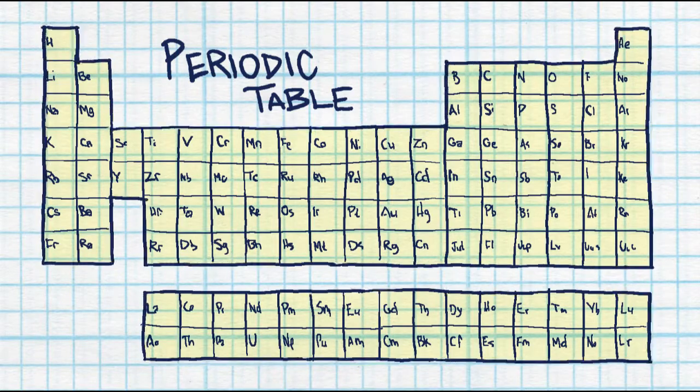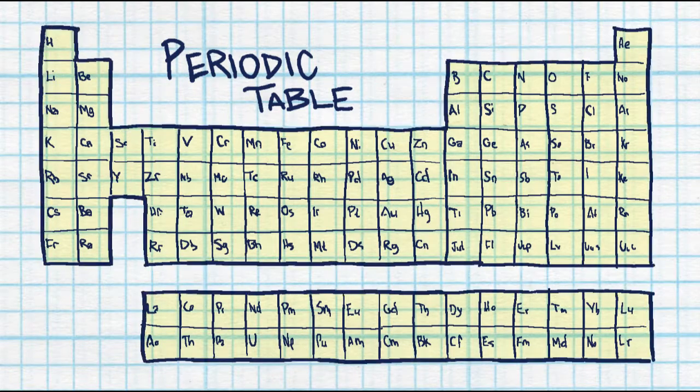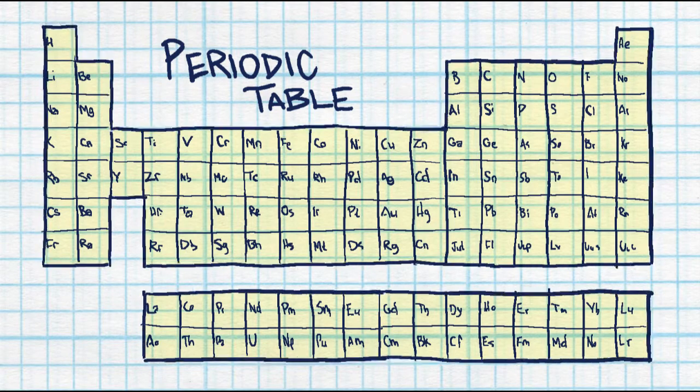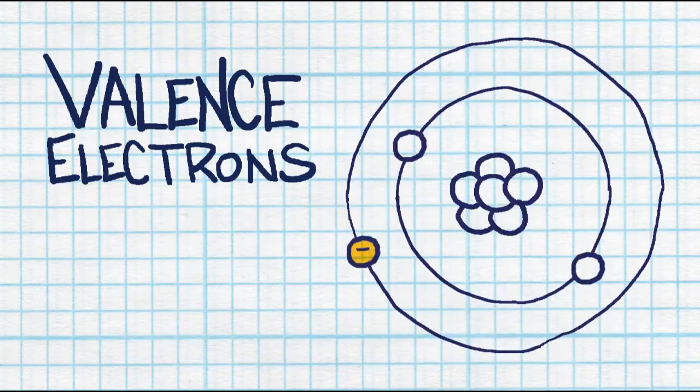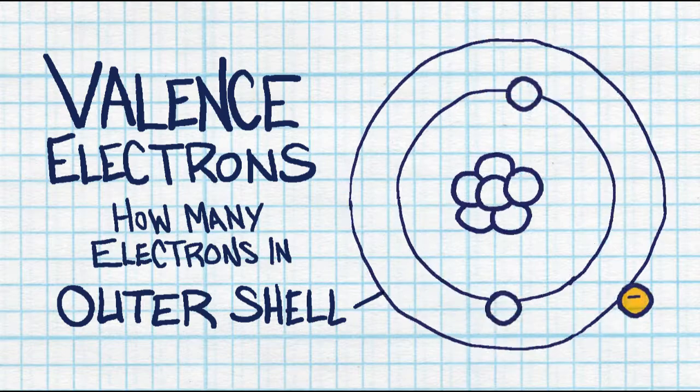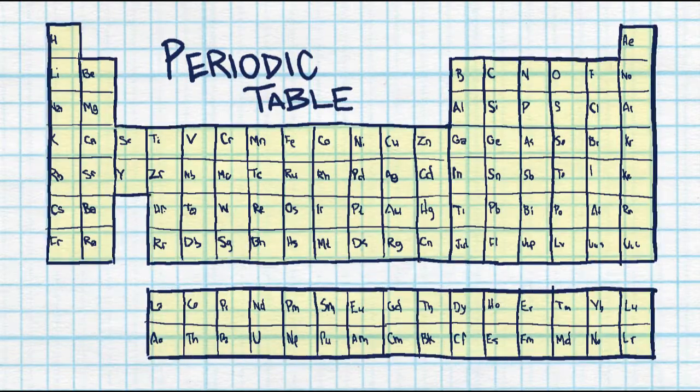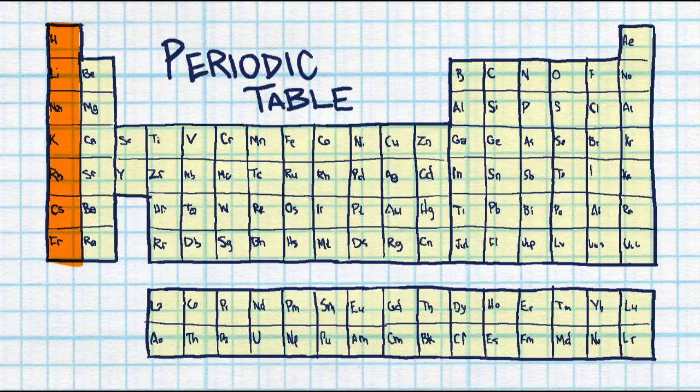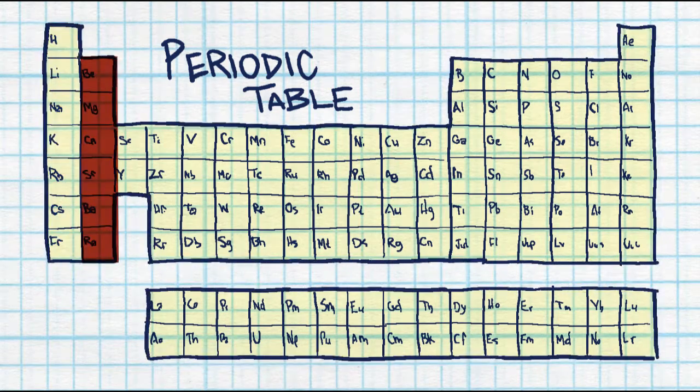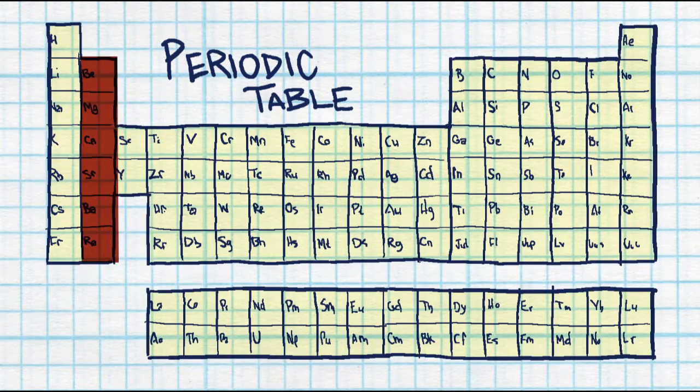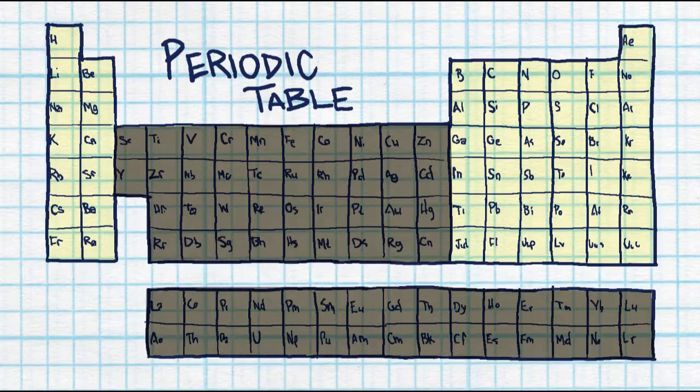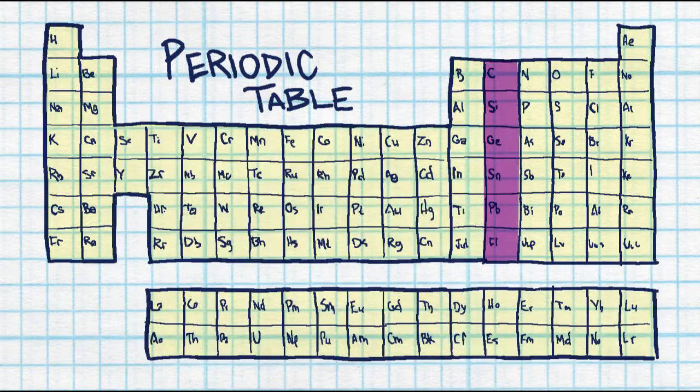On the periodic table of elements, you can also find other information besides atomic number. You can find out how many valence electrons there are, which is the amount of electrons in the outer shell, simply by counting over the group number. Group 1 has one valence electron. Group 2 has two valence electrons. You skip over the middle section, and starting in group 13, you have 3, 4, 5, and so on.